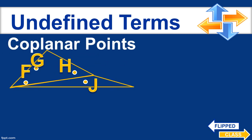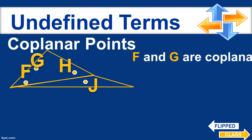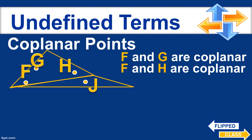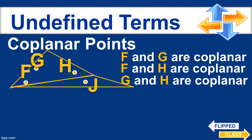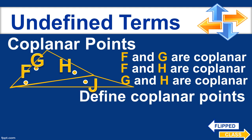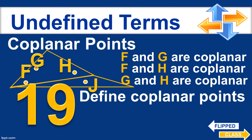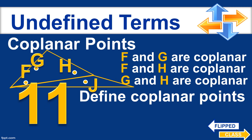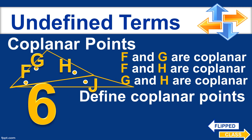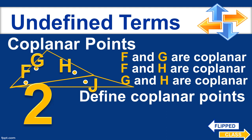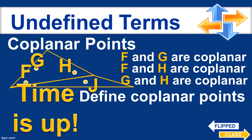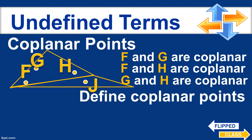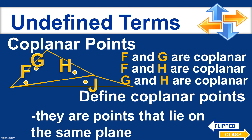Another group of points is called coplanar points. In the given figure, points F and G are coplanar, F and H are also coplanar, and G and H are also coplanar. Coplanar points are points that lie on the same plane. That's why they are called coplanar — same plane.